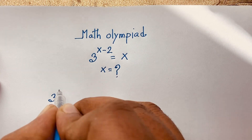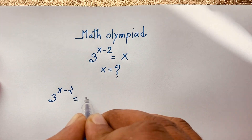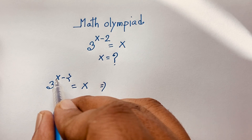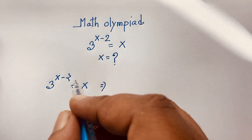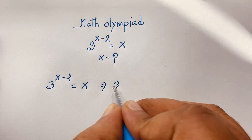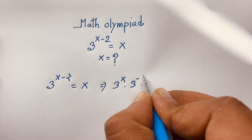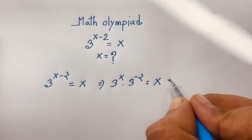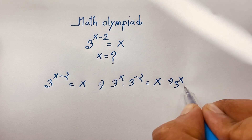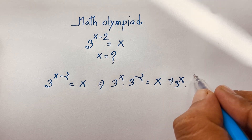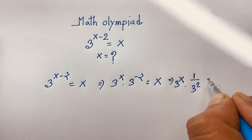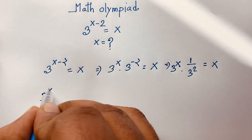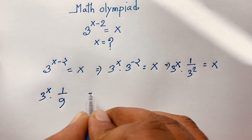Our question is 3 to the power x minus 2 is equal to x. According to the exponential law, a to the power n plus m equals a to the power n times a to the power m. Applying this law, we get 3 to the power x times 3 to the power negative 2 is equal to x. Now, 3 to the power minus 2 equals 1 over 3 squared, so we have 3 to the power x times 1 over 9 is equal to x.